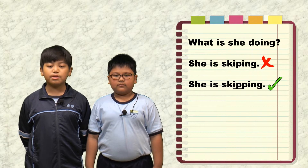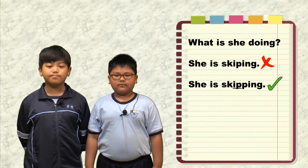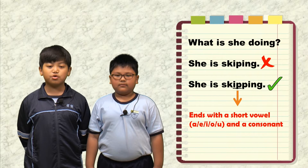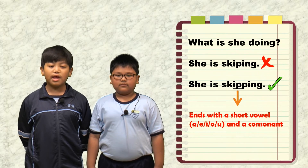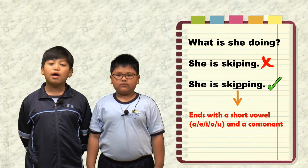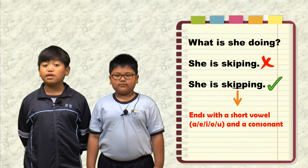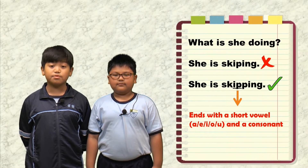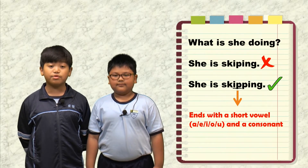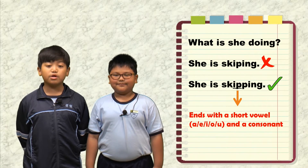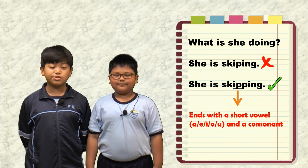You should double the last consonant P, because 'skip' is a verb that ends with a short vowel and a consonant. Can you think of some other examples where we have to double the last consonant when using present continuous tense?